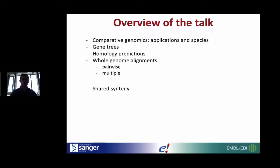We're going to think about a number of different types of analyses. Firstly, we have our gene trees, produced by comparing gene builds from one species to the next within Ensembl. Then we'll think about how we take these gene trees and make our homology predictions — predicting ortholog and paralog relationships. We'll also look at whole genome alignments, which come in two flavours: pairwise alignments between two species, and multiple whole genome alignments across species sets. Finally, we'll think about synteny — conserved gene structure between different species' chromosomal regions.